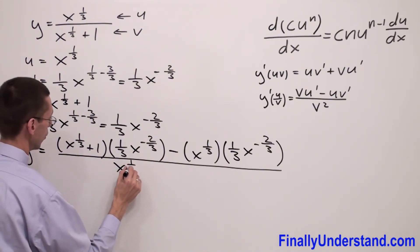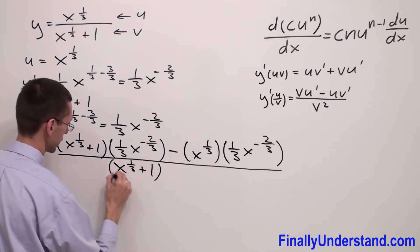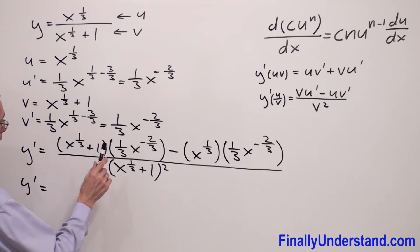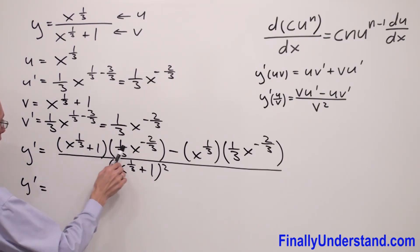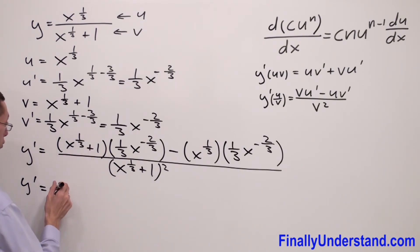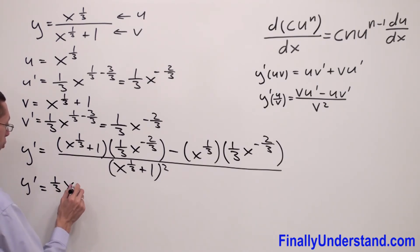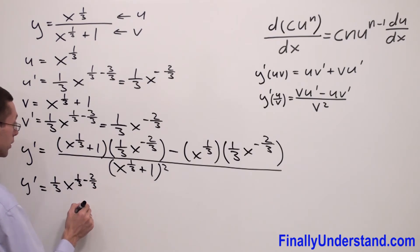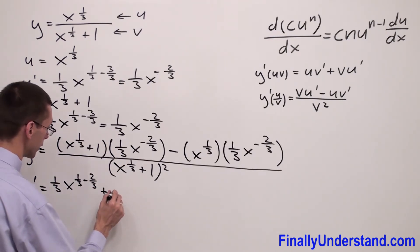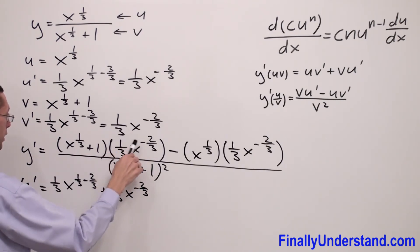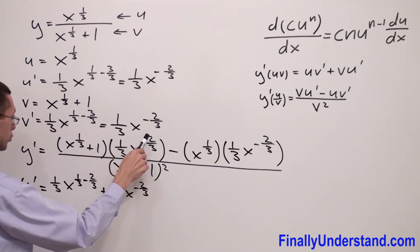So, I have x to the power 1 third. I have x to the power negative 2 thirds times x to the power 1 third. I keep the base and add exponents: 1 third plus negative 2 thirds gives negative 1 third. So, this simplifies — I simply multiply 1 third x to the negative 2 thirds times the parenthesis.